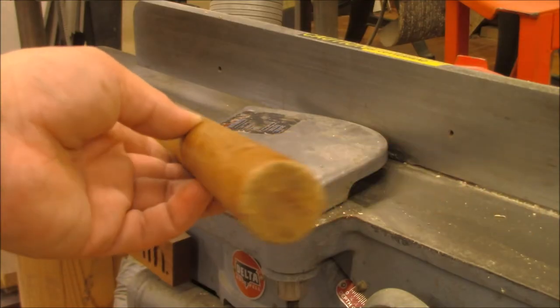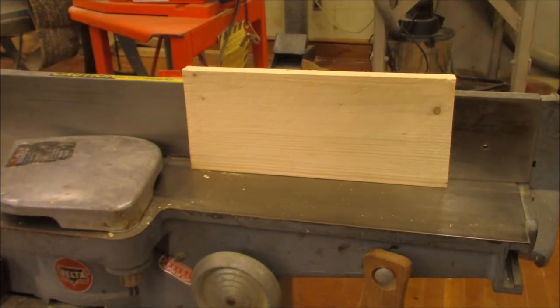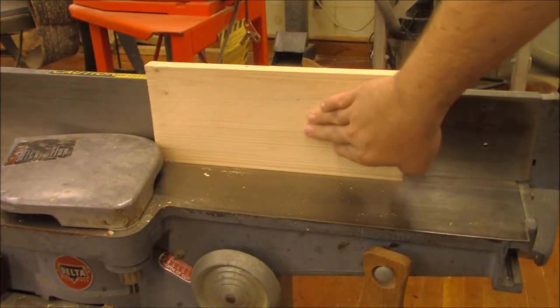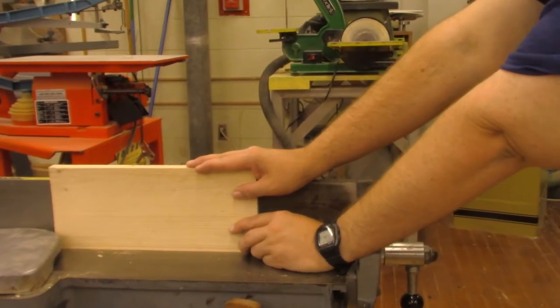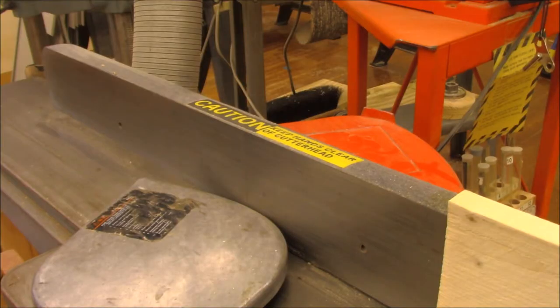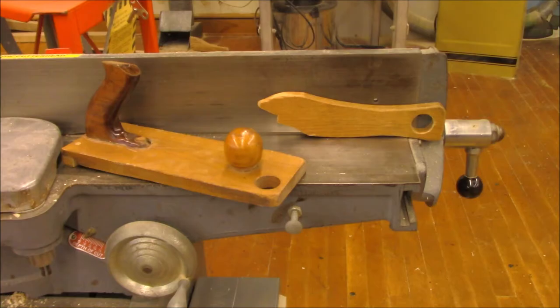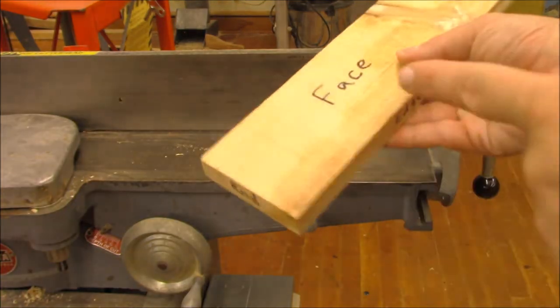Round stock should never be joined on the jointer. Avoid downward pressure. Use sideways pressure. Don't force the workpiece. The guard must be used at all times. Use a push stick or shoe when joining narrow boards. Do not join end grain or cross grain.